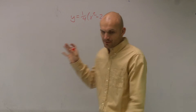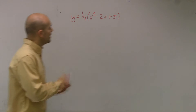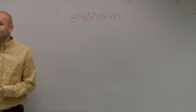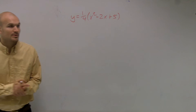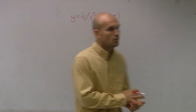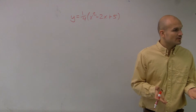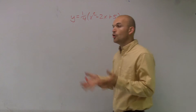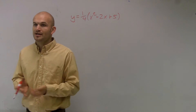For this problem, we need to determine what kind of parabola we're going to have. When we look at our parabolas, we need to look at what variable is being squared. If our x is being squared, then we know that we're going to have a vertical parabola, meaning it's going to open up or open down, or we're going to have a vertical line of symmetry.